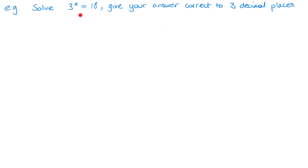So here we have 3 to the power of x equals 18, and I want to solve it for x. Obviously, we can't turn 18 into 3 to the power of something — going up in 3s: 3, 9, 27, we jump past it. There's no simple way of doing it; we can't take a square root, cube root, or anything like that.